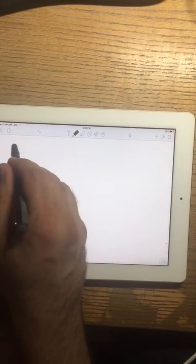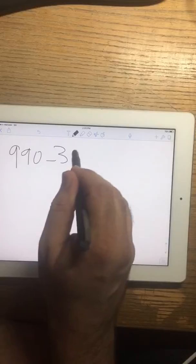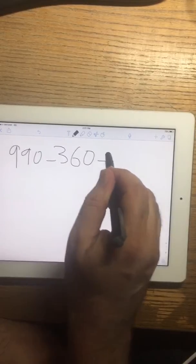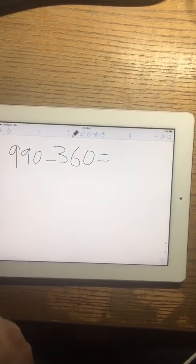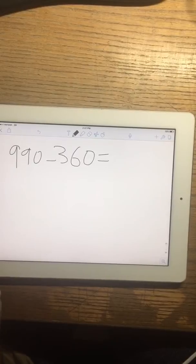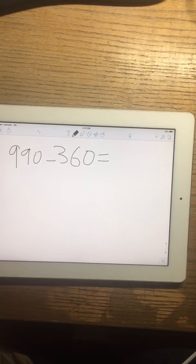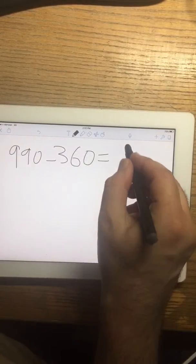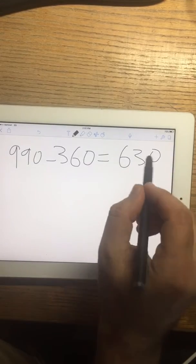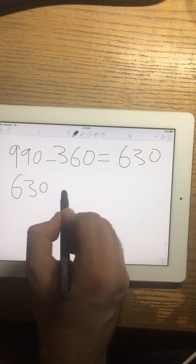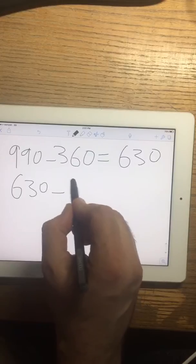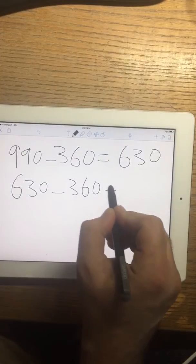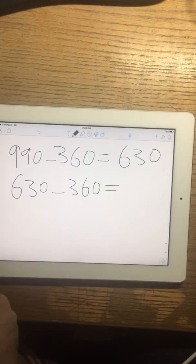So I say 990 minus 360. Let's see what happens. 990 minus 360 is 630. And again, 630 minus 360 is 270.